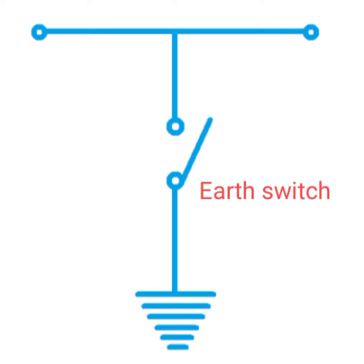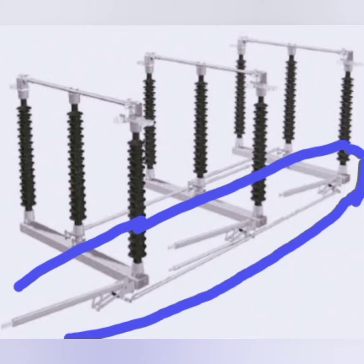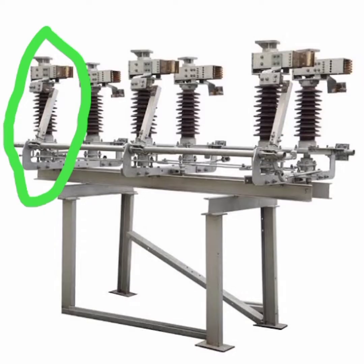This is the symbol of the earth switch in your SLD. This is the example of open — normally whenever the earth switch is opened, it is separated from your system. Then normally if the earth switch is in closed condition, whenever the earth switch is closed, automatically the isolator needs to be opened.